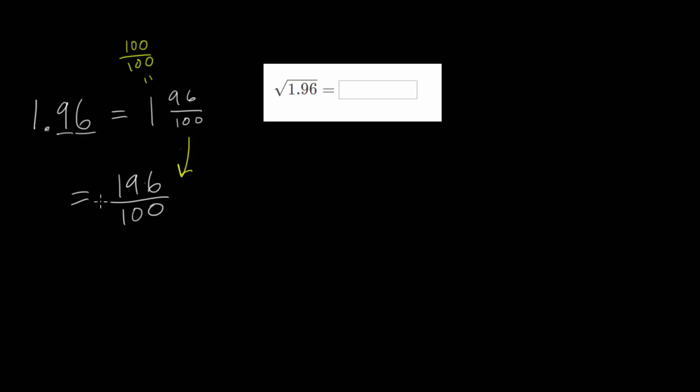And from here we can actually take the square root. So to take the square root of 1.96, we first rewrite it as a fraction, which is 196 hundredths. And from here we can take the square root of the numerator and divide it by the square root of the denominator.